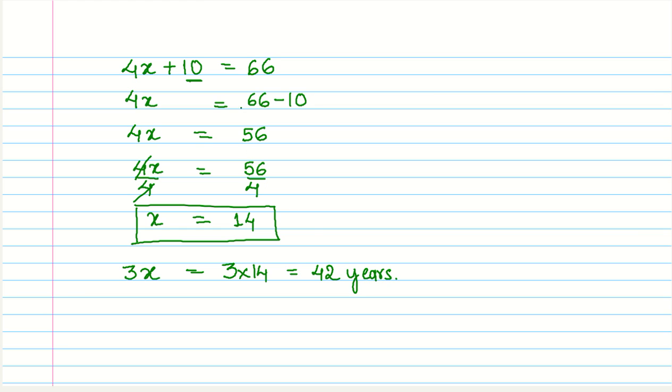Now, if you want to check it, whether it complies with this equation, what we do is we just substitute the solution that we have got into the equation that we formed. So we have 4 times x plus 10 equals 66. So what do we do? Let's put x equals 14. So we have 4 times 14 plus 10 equals 66.